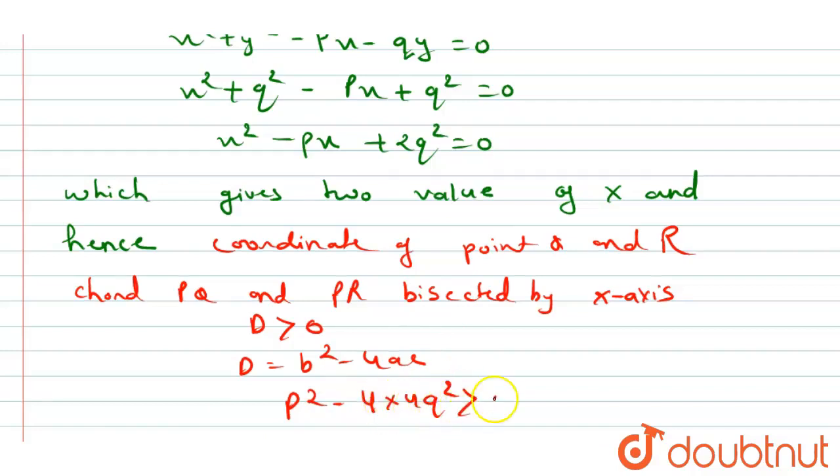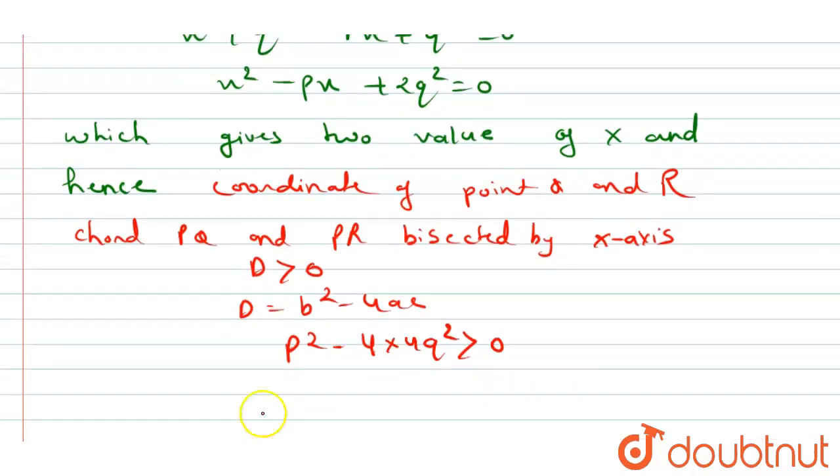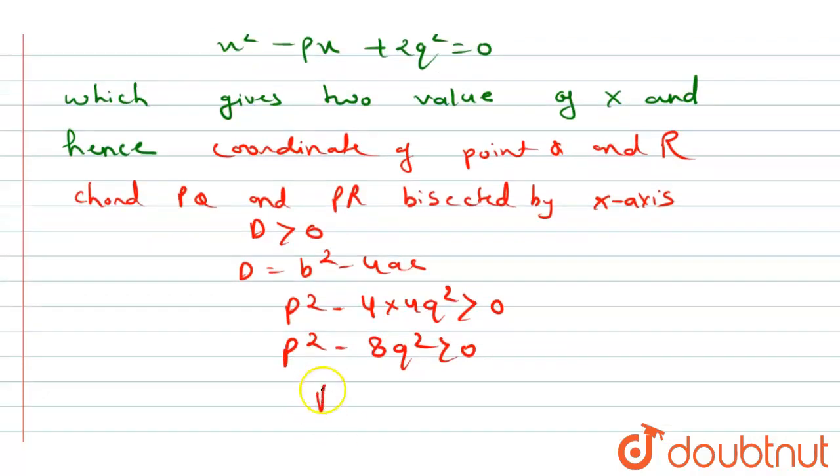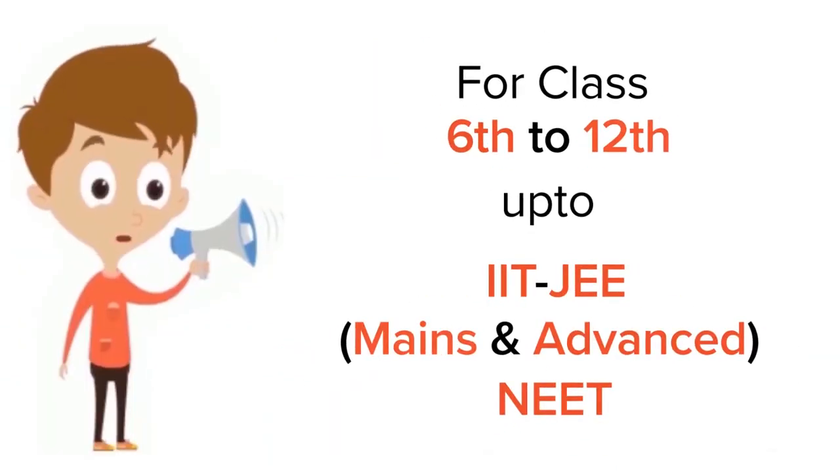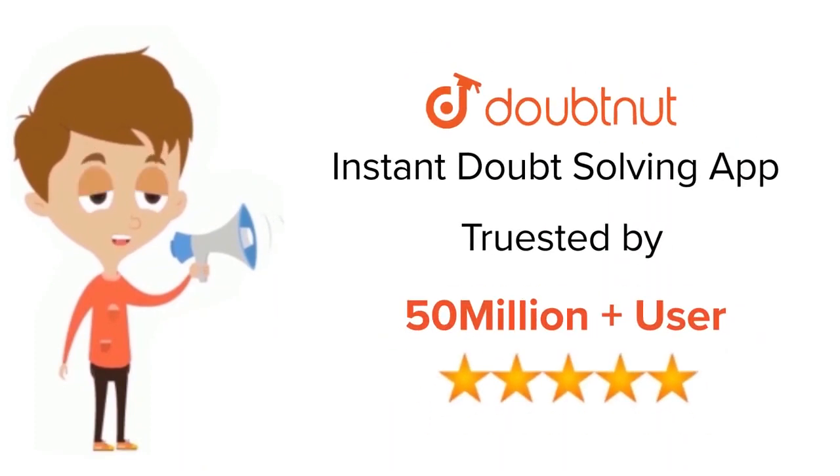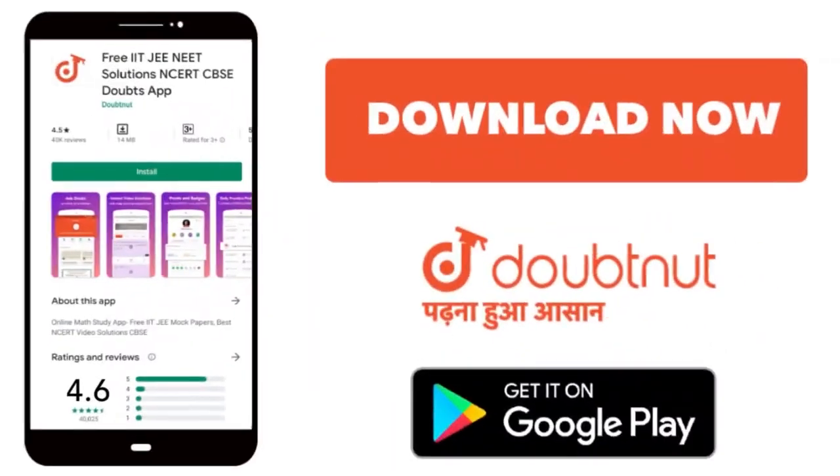This is greater than 0. What we will get here: p² - 8q² is greater than 0, or we will get p² is greater than 8q². This is what we have to prove in this question. Thank you.